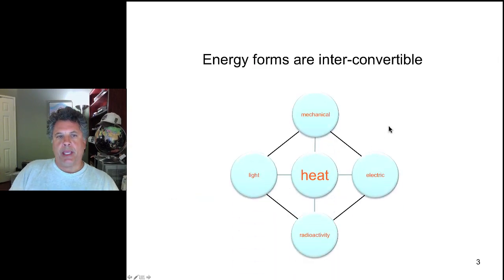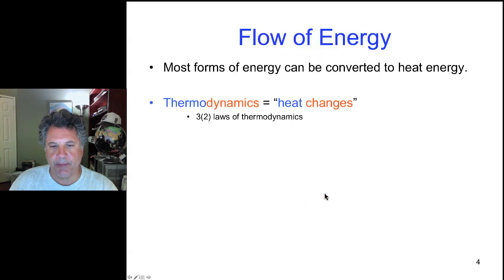Now energy forms are interconvertible. So we can have, for example, mechanical energy, electrical energy, radioactivity is energy, light energy. And these are all interconvertible, but all can definitely be converted to heat. And so we refer to most energy in biological systems in terms of heat, in terms of temperature.